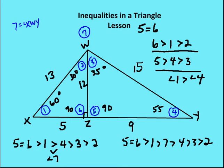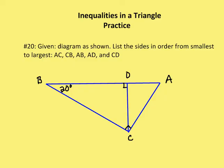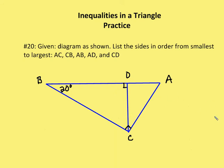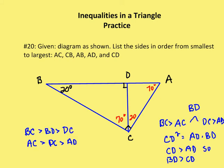Now let's move on to another practice problem — two more and we'll be done. Given the diagram shown, list the sides in order from smallest to largest: AC, CB, AB, AD, and CD. I'm going to fill in a right angle here — altitude on hypotenuse — and fill in the missing values. Angle BDC was given at 20 degrees, so DCB is 70. DCA is 20, and DAC is 70 degrees. So we establish the angle relationships for each of the given triangles.